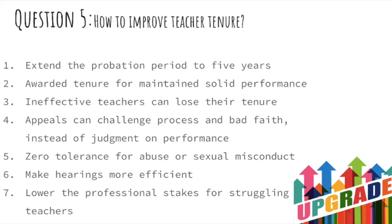Second, tenure should be earned only when a teacher can show consistent academic progress of their students — it should not be awarded by default. Third, a teacher who earns consistently poor annual evaluations should be able to lose their tenure, and if they improve performance, they can regain it. Fourth, standards should specifically be in the best interest of students as a top priority, and the appeals process can change from bad faith to judgment on performance. Fifth, having zero tolerance for abuse and sexual misconduct. Sixth, making hearings more efficient — hearings should not last more than a day, and an entire appeal process should last no more than 90 days. Except in cases of egregious misconduct like abuse or harassment, dismissal shouldn't involve risk of having a teacher's license revoked.